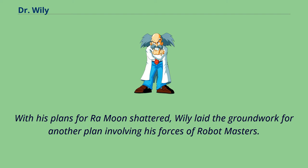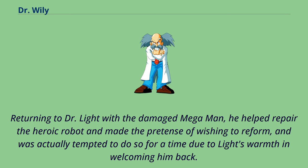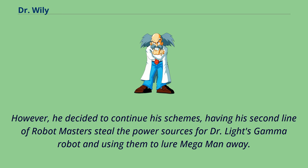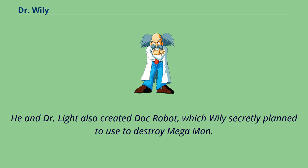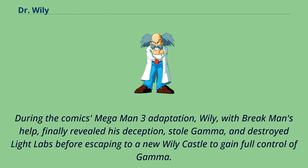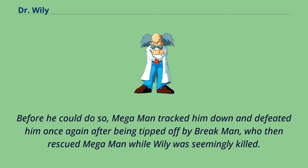With his plans for Ra Moon shattered, Wily laid the groundwork for another plan involving his forces of robot masters. Returning to Dr. Light with the damaged Mega Man, he helped repair the heroic robot and made the pretense of wishing to reform, and was actually tempted to do so for a time due to Light's warmth and welcoming him back. However, he decided to continue his schemes, having his second line of robot masters steal the power sources for Dr. Light's Gamma robot and using them to lure Mega Man away. He also tricked Mega Man and several other robot masters into going to his old lab where the Wily Walker remained in storage, and tricked them into activating it in a failed attempt to destroy them. He and Dr. Light also created Doc Robot, which Wily secretly planned to use to destroy Mega Man. During the comics' Mega Man 3 adaptation, Wily, with Break Man's help, finally revealed his deception, stole Gamma, and destroyed Light Labs before escaping to a new Wily Castle to gain full control of Gamma. Mega Man tracked him down and defeated him once again after being tipped off by Break Man, who then rescued Mega Man while Wily was seemingly killed.